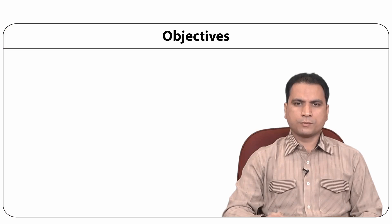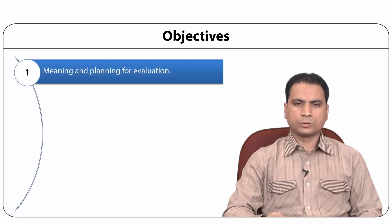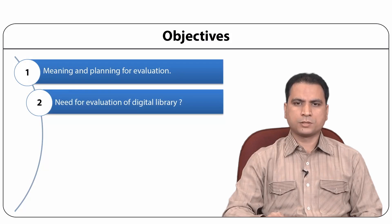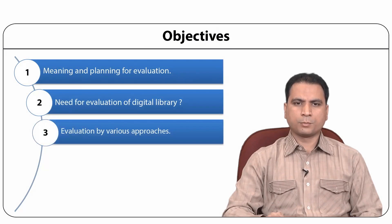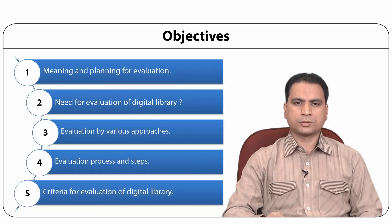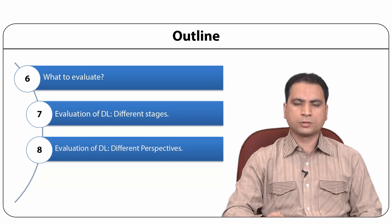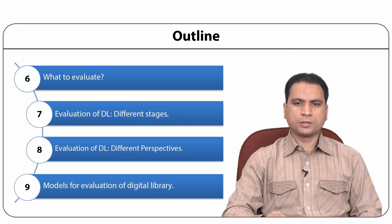Let us start with the objectives of this module. After studying this module, you will be able to understand various aspects of evaluation of digital library. Some important objectives are: to understand the basic concept behind evaluation of a digital library; the need and purpose of digital library evaluation; different approaches for evaluating a digital library; the process and steps for digital library evaluation; criteria for evaluation; how one can start the process of evaluation; different stages of evaluation; and models of digital library evaluation.